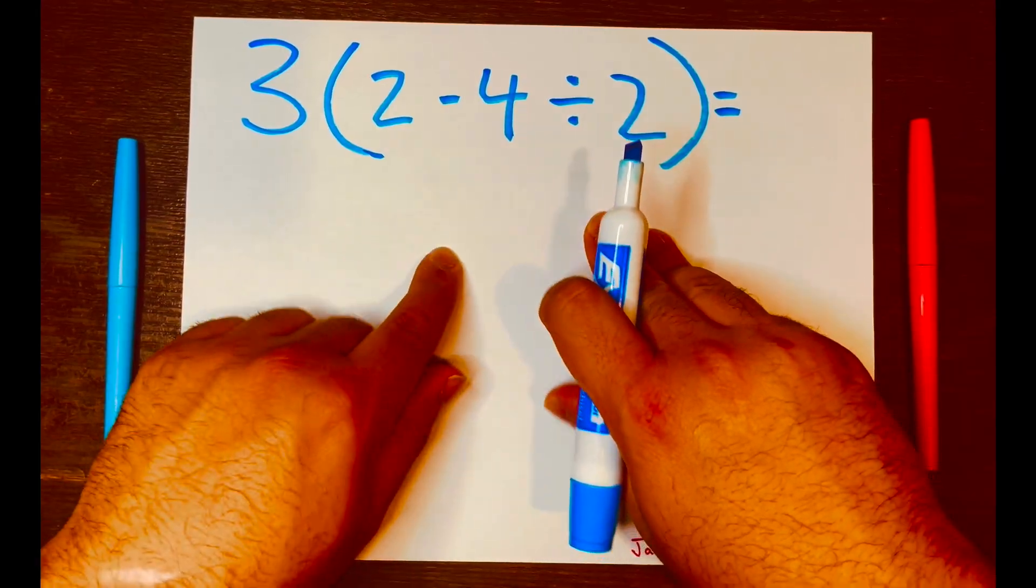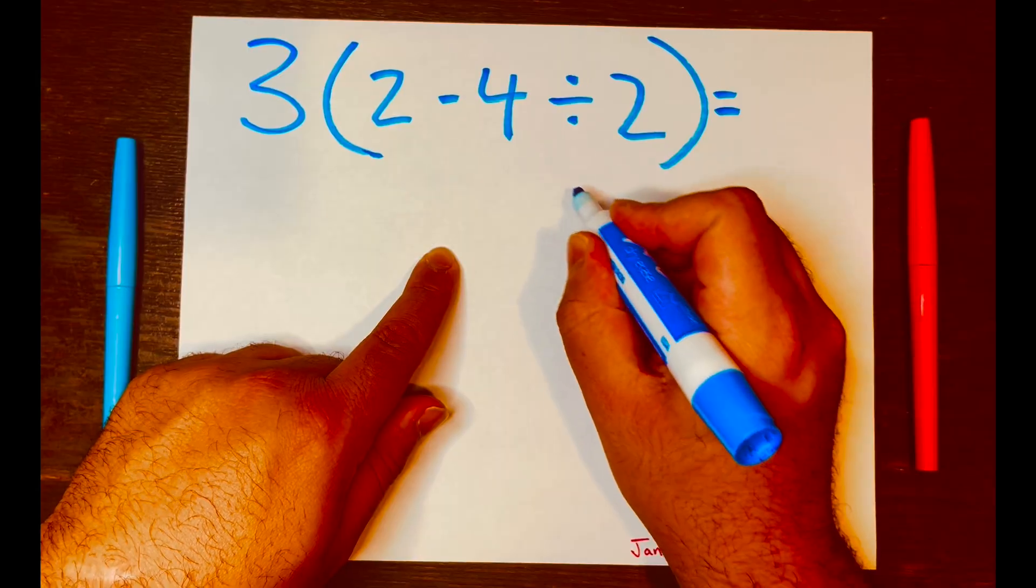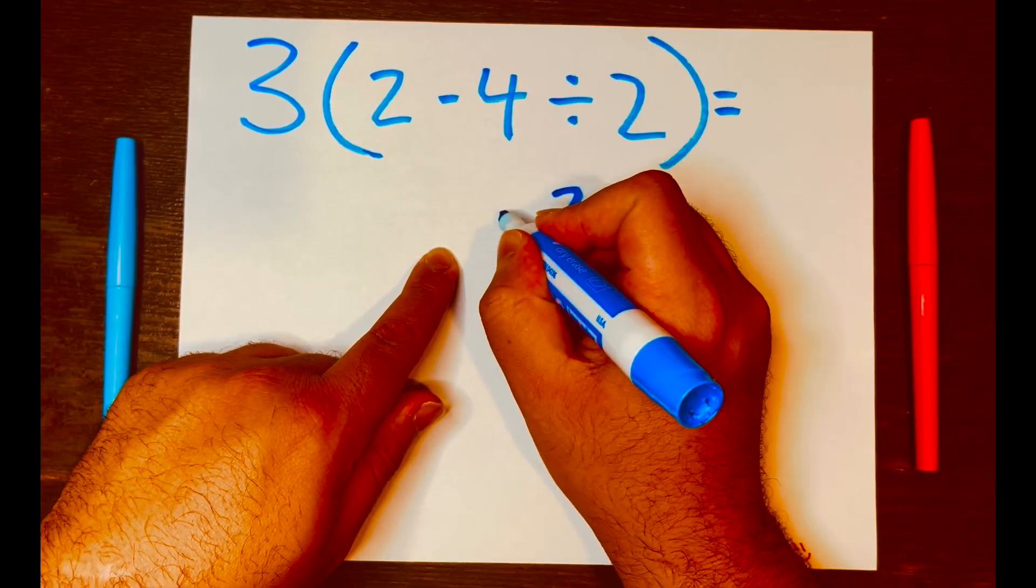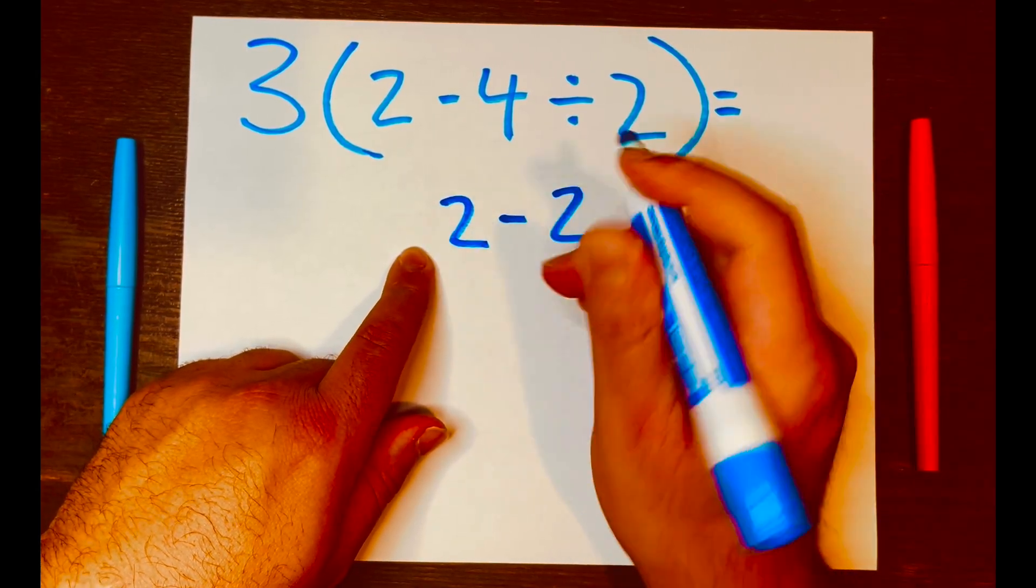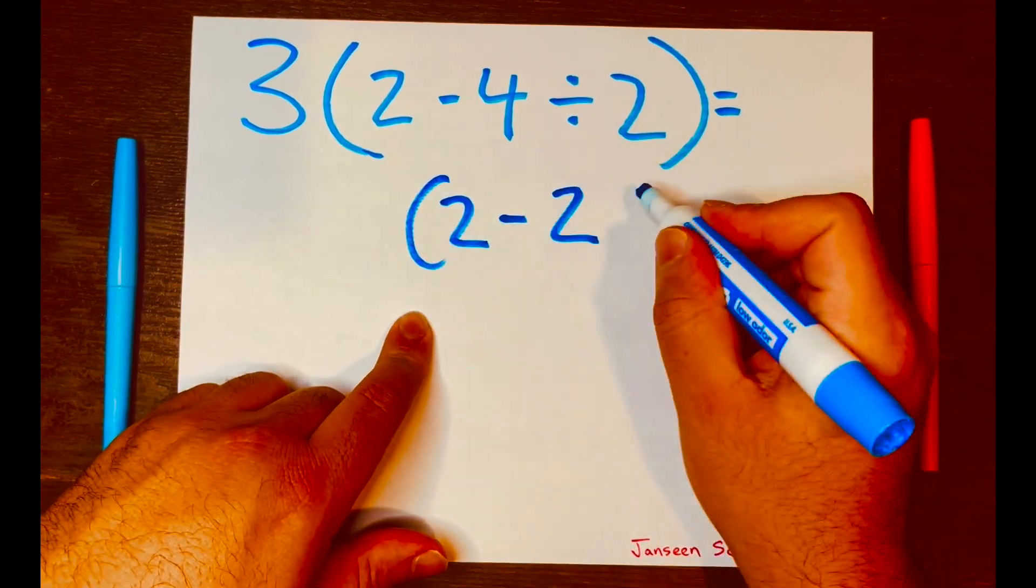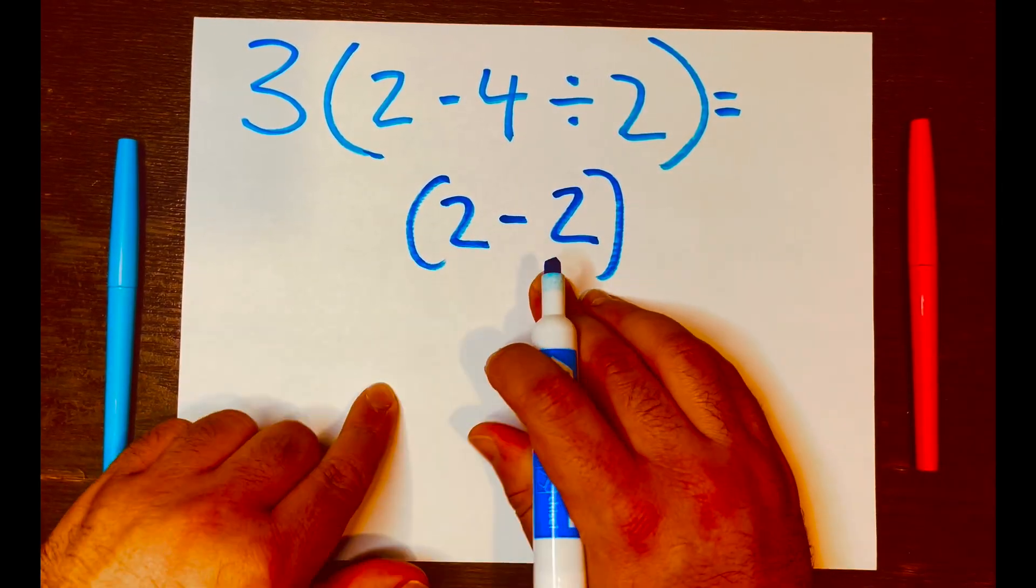So four divided by two, that is two. So I'll write the two here, and then bring down the two minus and keep the parentheses. And then two minus two is zero.